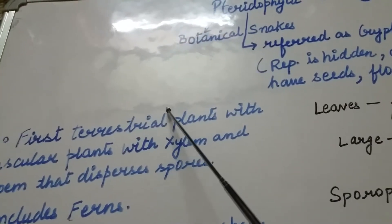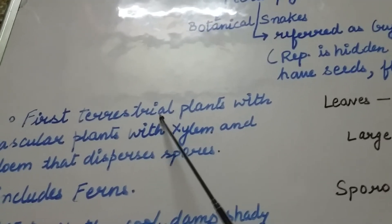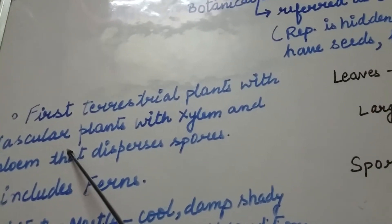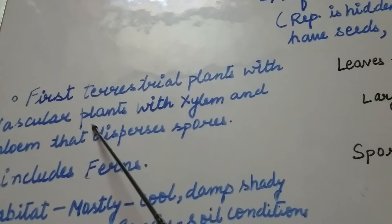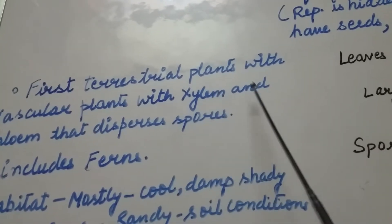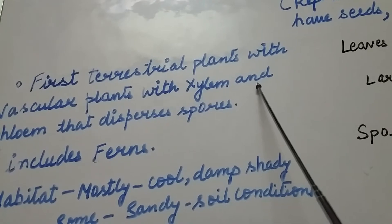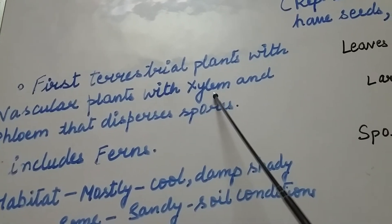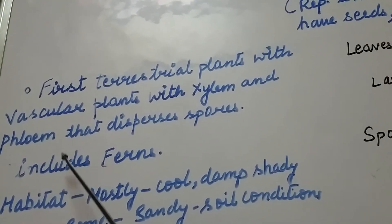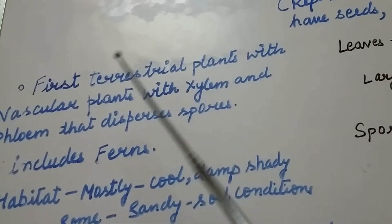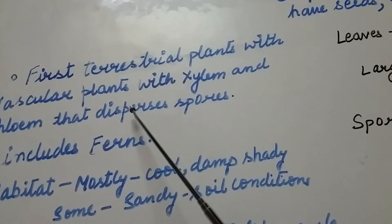Pteridophyta are the first terrestrial plants with differentiated vascular tissues. Vascular tissues means the plants which have conducting tissues, that is xylem and phloem, for the transportation of minerals, water, and food. Xylem transports water and minerals from the roots, and phloem transfers food, minerals, and water to other parts of the plant — the branches and leaves.